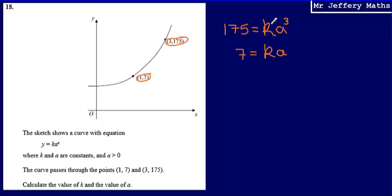So what I need to do is I need to try and eliminate one of the unknowns. And what I can spot is that in both of these equations, I have k multiplied by a. So in order to eliminate these, what I could do is if I were to divide these two equations, the k's would cancel each other out.